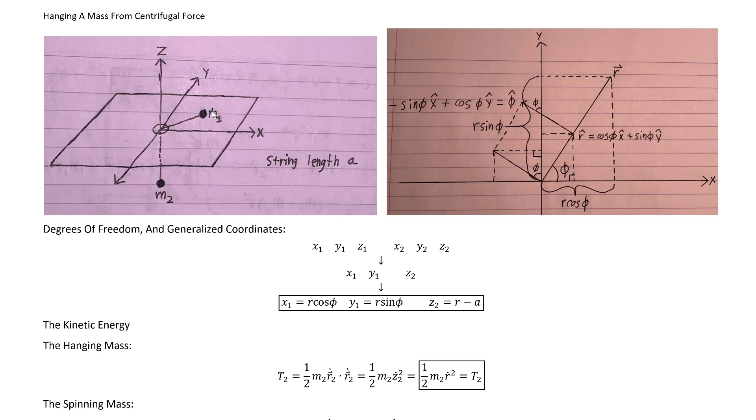Which, of course, if you're using the right base Lagrangian to start with, in this case T minus V, where T and V are taken to be the normal classical non-relativistic quantities, is consistent with Newton's laws.